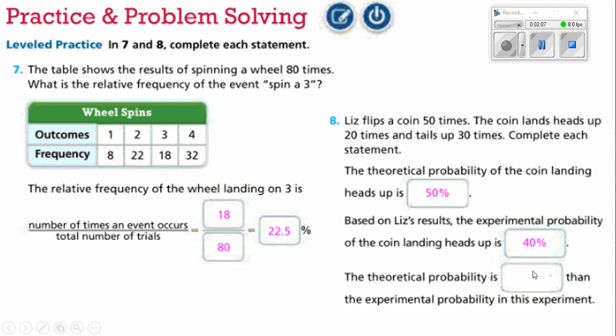The theoretical probability is blank than the experimental. The theoretical would have been 25 times and the experimental, which is 20 times. So the theoretical probability is greater than the experimental probability in this particular experiment.